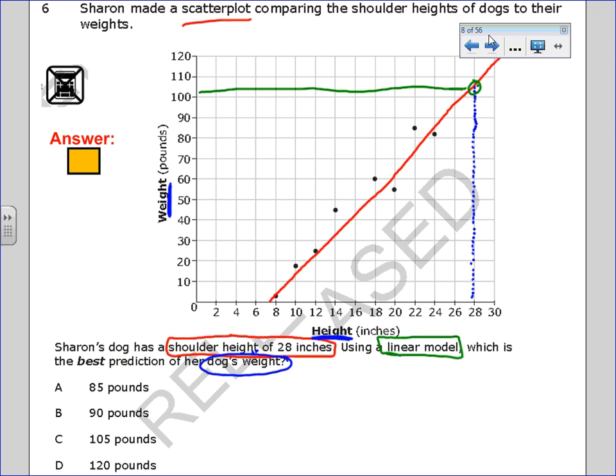When I look at my answer choices, the first option is 85 pounds. That would be right here, that doesn't make sense. The next option would be 90 pounds, right here. Based on my red line, that doesn't work. 120 would be all the way at the top, that's way too big. So the only one that makes sense is C.